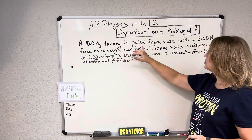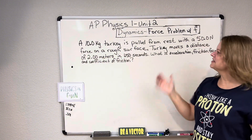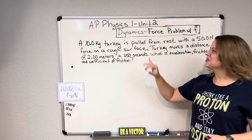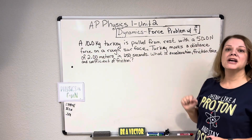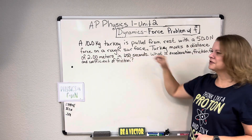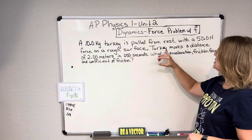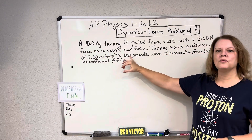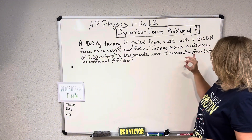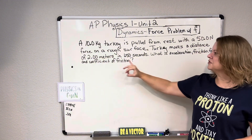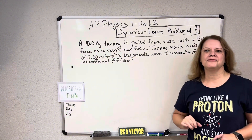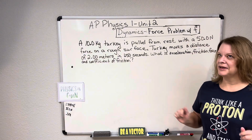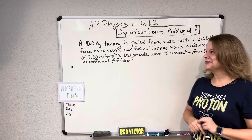I have a 10 kilogram turkey — you know, we've got Thanksgiving coming up soon. A 10 kilogram turkey is pulled from rest with a 50 Newton force on a rough surface. So your table's a rough surface. The turkey moves a distance of two meters in 1.50 seconds. What is acceleration, friction force, and coefficient of friction? For you vegetarians out there, I apologize for the problem ahead of time. Let's just try to go with the season.